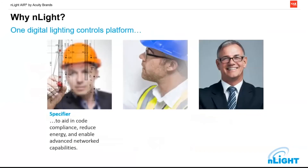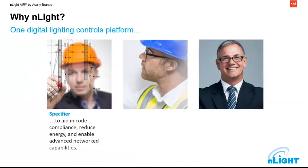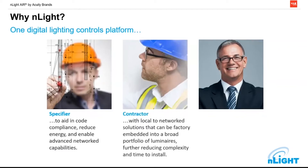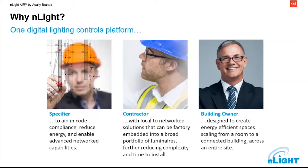So why nLight? It's one digital lighting controls platform. For the specifier, it brings up code compliance, allows an easy way to communicate with the building automation system, and also reduces energy and gives us some advanced networking capabilities. For the contractor, we can see anything from a small local wired system to a large building integration system. It's easy to install and will bring your costs down on a project. For the building owner or end user, the system is designed to create energy efficient spaces, save money, and give you the ability to make changes in the future as your building needs change.